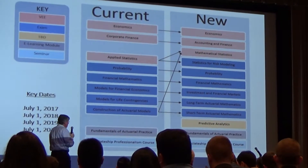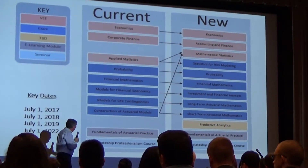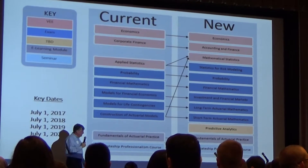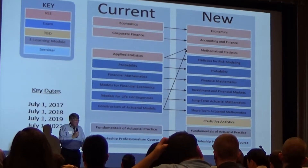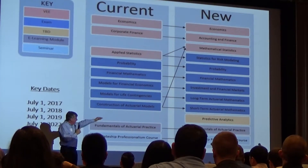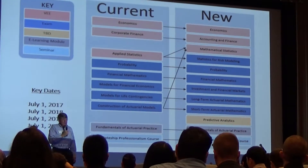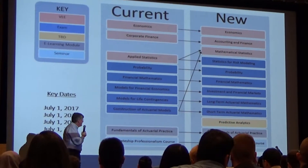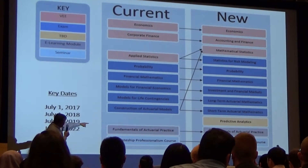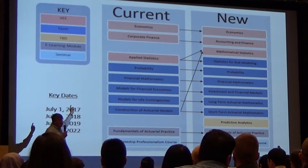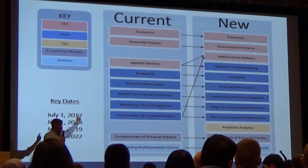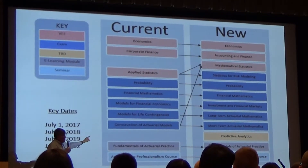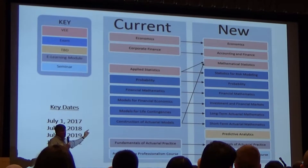Fundamentals of Actuarial Practice carries straight over, as does the Associate Professionalism Course — the one-day in-person course. Predictive analytics, however, is brand new. Nothing converts over to it — you have to take it if you don't meet all the requirements. Up in the box it says TBD, to be determined. The Society of Actuaries Board of Directors mandated that it be a fully proctored project.